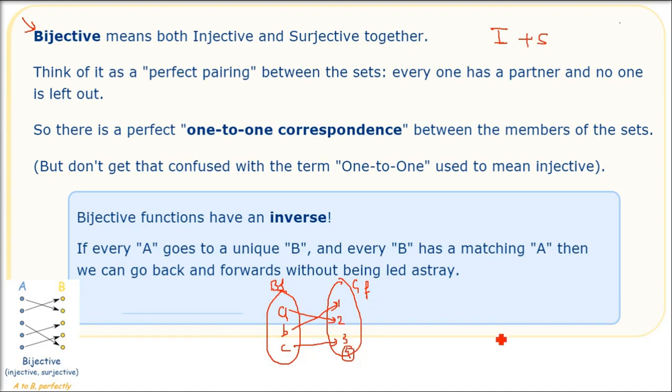Injective was saying one-to-one pairing. Surjective was saying you can have multiple, but no element in B should be left. So the combination of this is one-to-one correspondence - a bijective function.